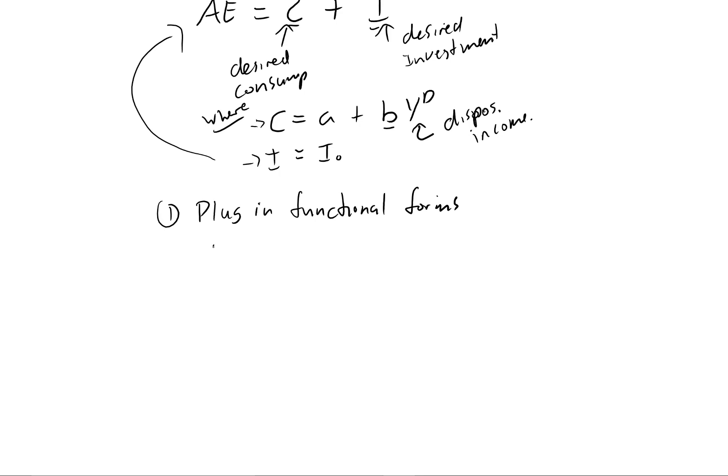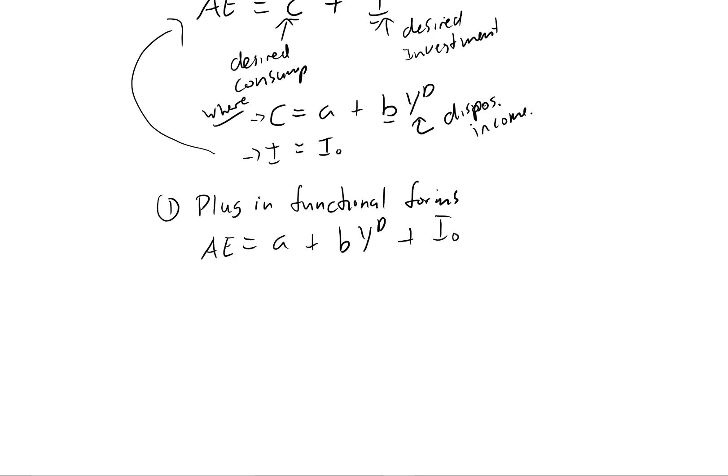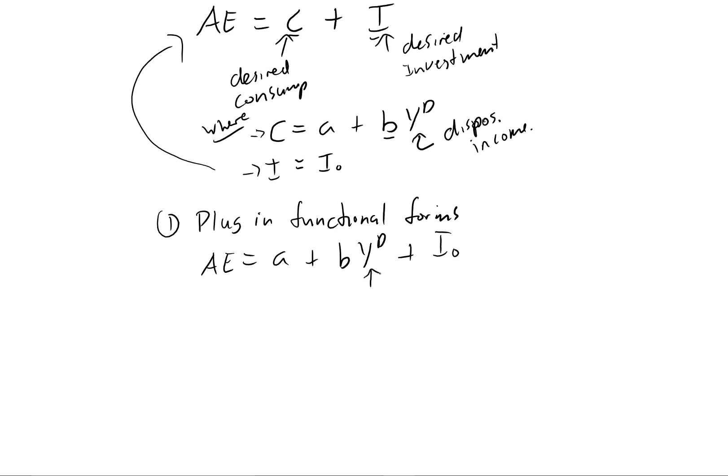Okay, so now we have AE equals A plus B times YD plus I zero. Alright, one thing we know is that YD just equals Y here, because there's no government. So there's no taxes, so all the money you earn, you don't pay any tax on that, it's all disposable income.